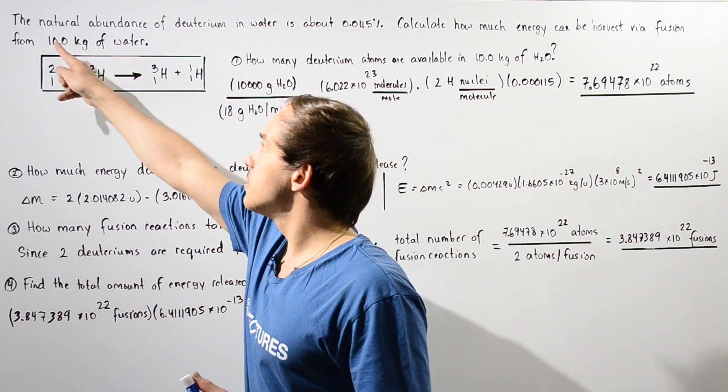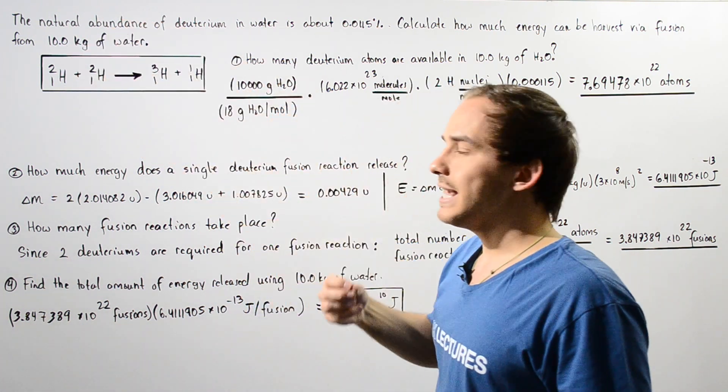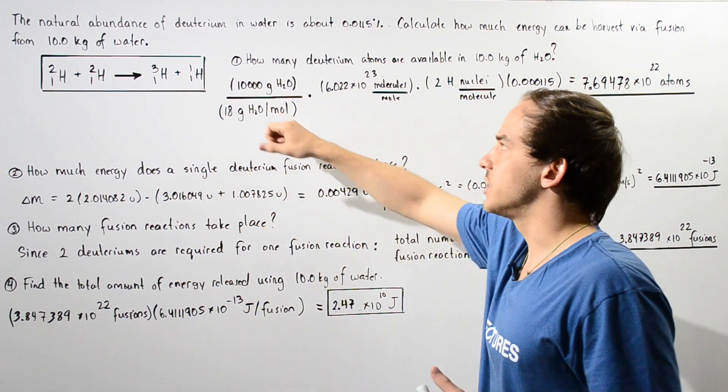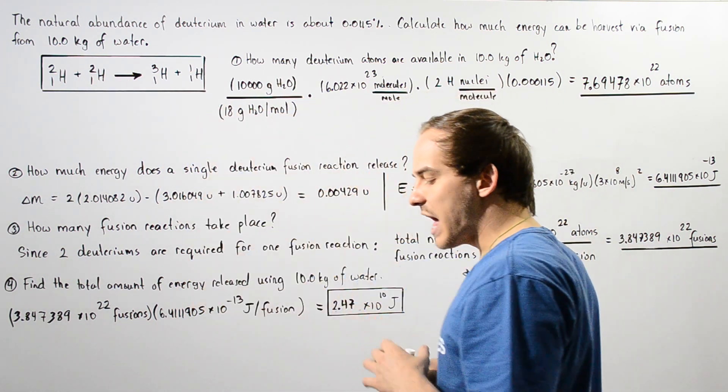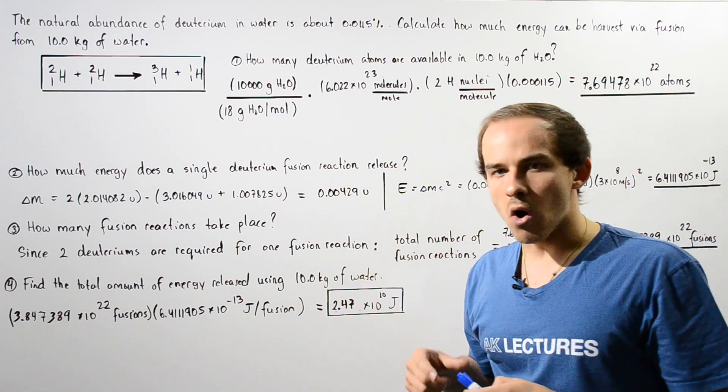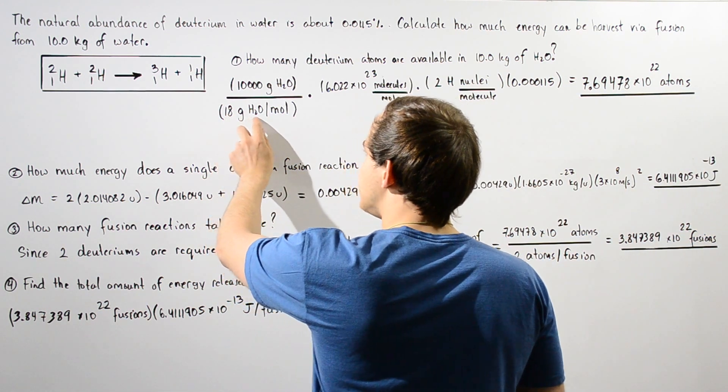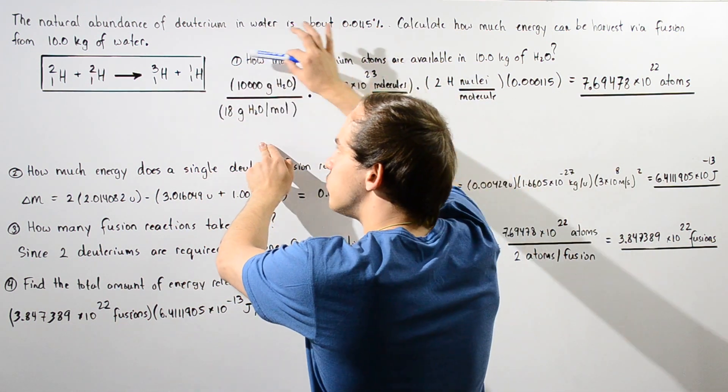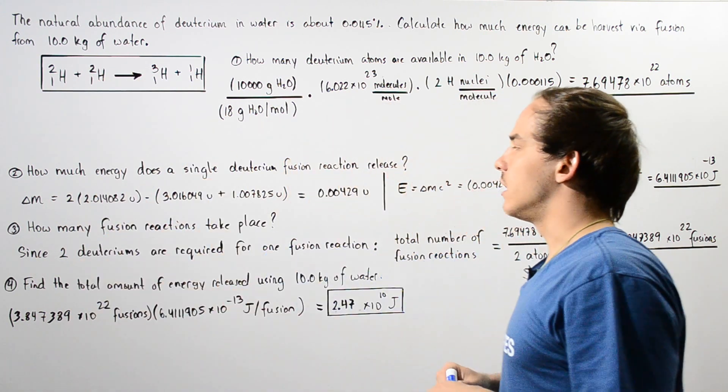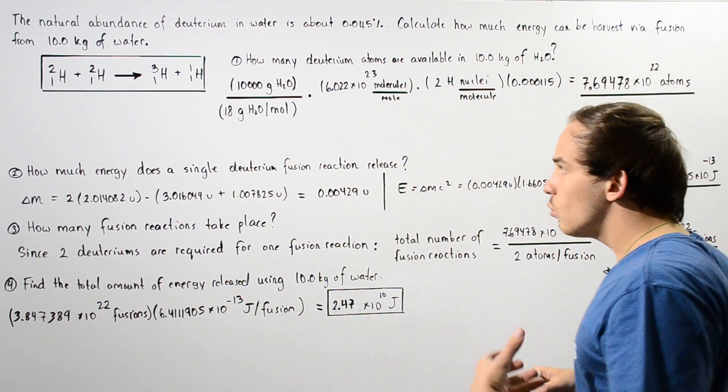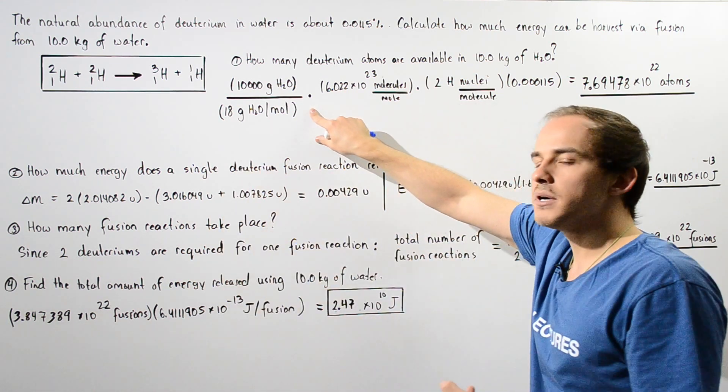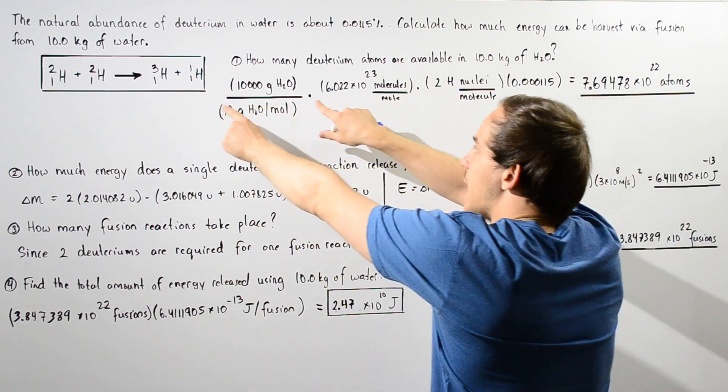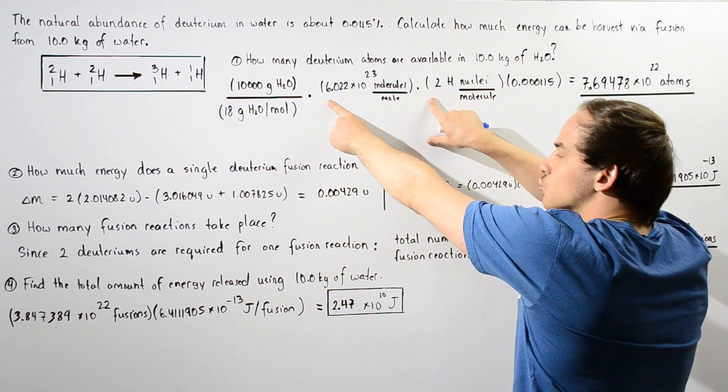we begin by converting the amount of water into grams. So we multiply 10 kilograms by 1,000 and divide that by the molecular mass of water, 18 grams of H2O per mole. And this gives us how many moles of water we have in 10 kilograms of water. So now we must determine the number of molecules of water in this many moles by multiplying this by Avogadro's number.